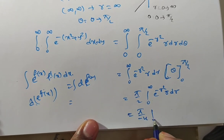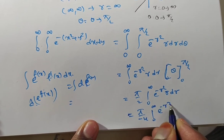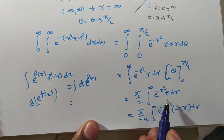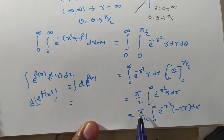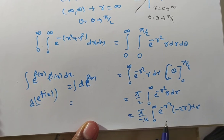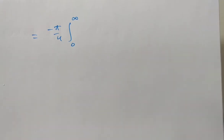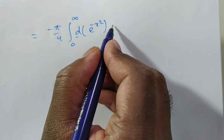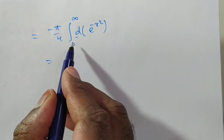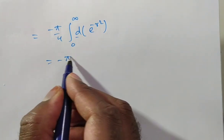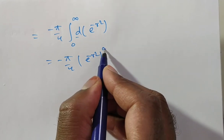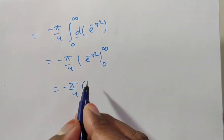This gives pi by minus 4 times the integral from 0 to infinity of e to the power of minus r squared times minus 2r dr. We multiplied and divided by minus 2, so we have minus 4 outside. This integrand is now the derivative of e to the power of minus r squared, so integration and differentiation cancel, giving e to the power of minus r squared with limits from 0 to infinity.